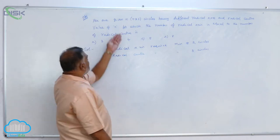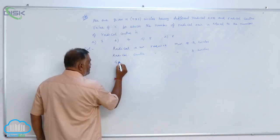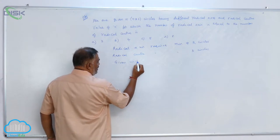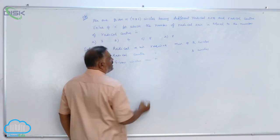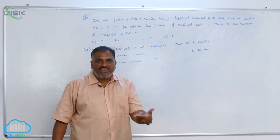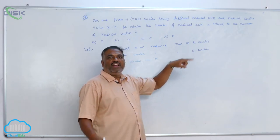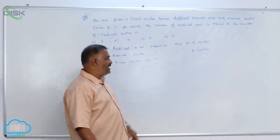Given N circles in total, the number of radical axes according to permutations and combinations: out of N circles, two circles are needed, which can be selected in NC2 ways. So the number of radical axes is NC2.